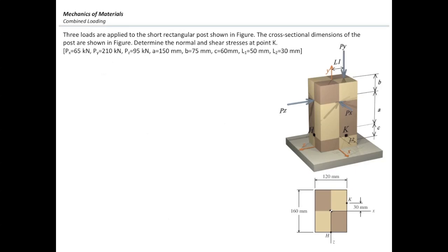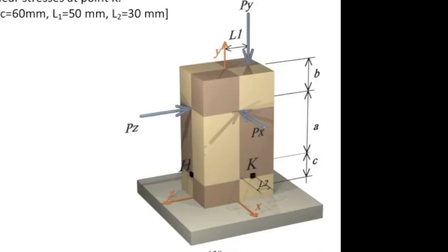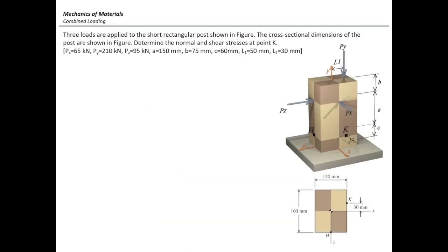A rectangular post is subjected to three loads as shown in the figure, and we want to determine the stress at point K. K is located 30 mm above the x-axis and C above the bottom part of this post. All other dimensions including the forces and the magnitudes of A, B, C, L1, and L2 are also provided for this question.